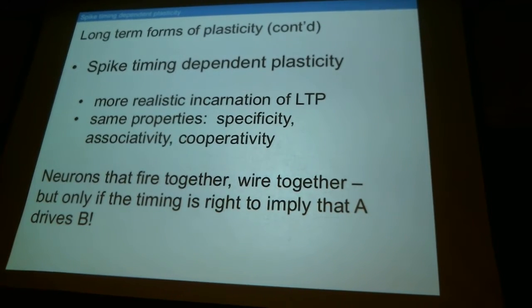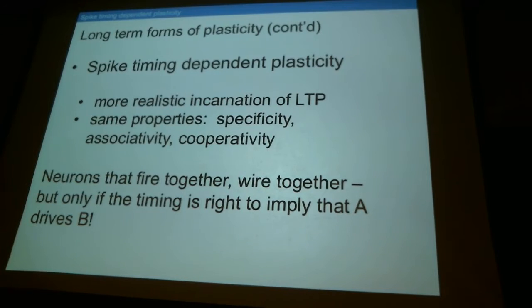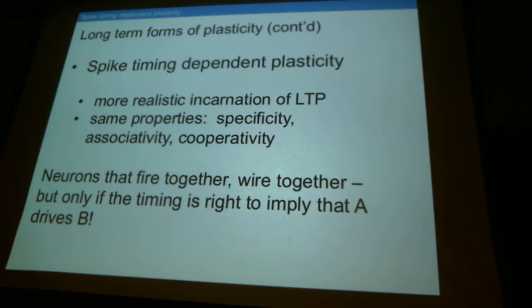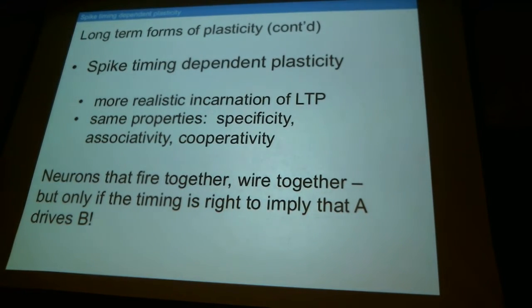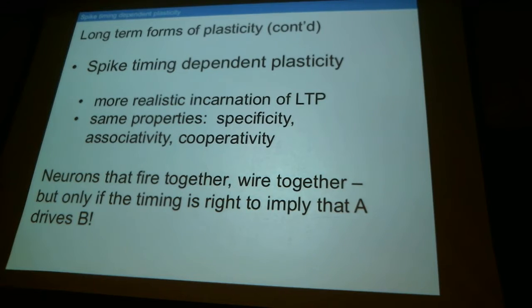We're going to talk about one last form of plasticity — a form of LTP where we're not going to use a powerful crude tetanus-type input. Instead, we'll use more precision. We talked earlier about Hebbian plasticity, where coincidence of activity in the presynaptic and postsynaptic cells produces synapse strengthening — neurons that fire together wire together. This is a literal incarnation of that. We're talking about timing on the scale of milliseconds.